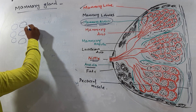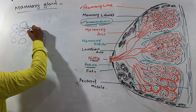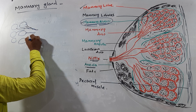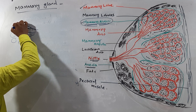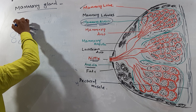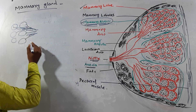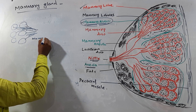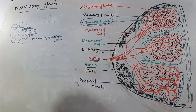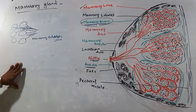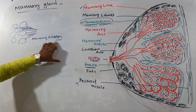The mammary alveoli give their secretion to the mammary tubules. The milk is secreted from the mammary alveoli and collected through the mammary tubules.